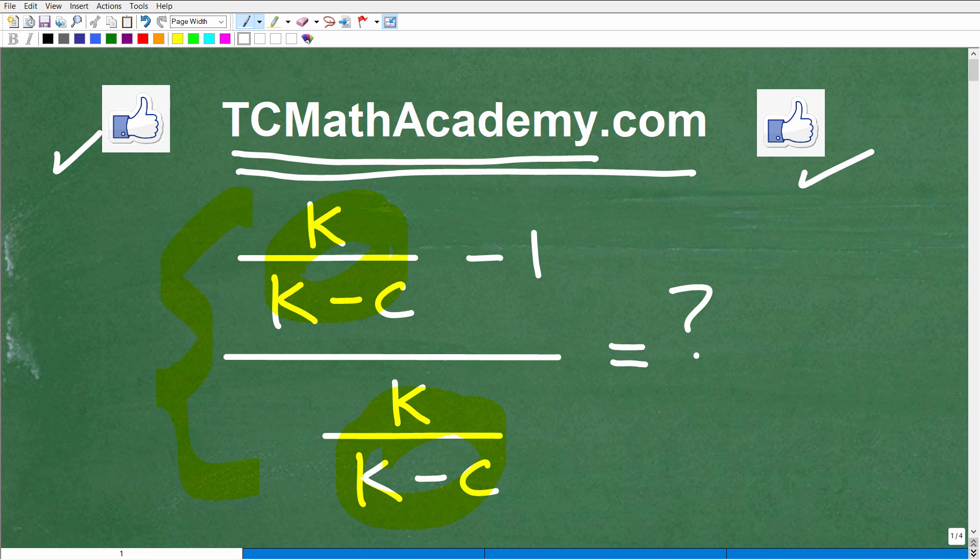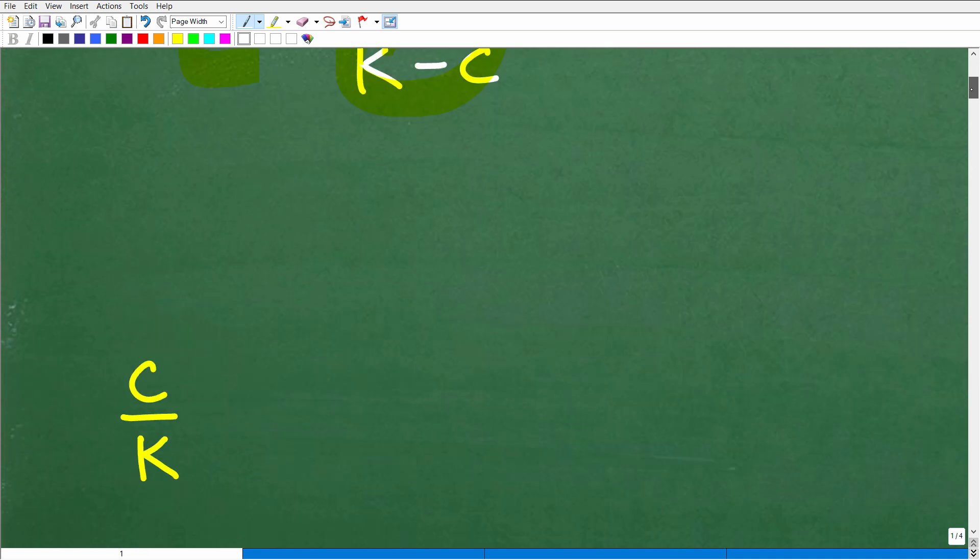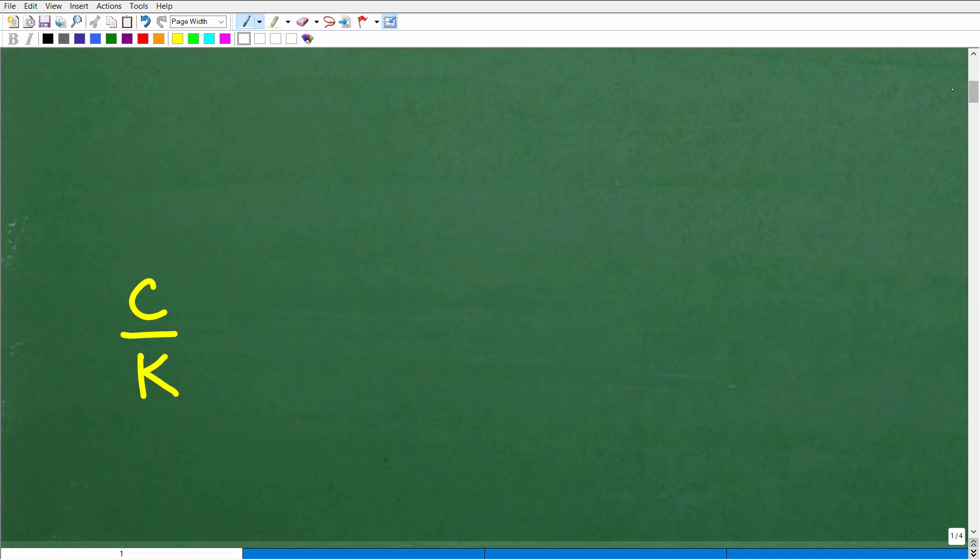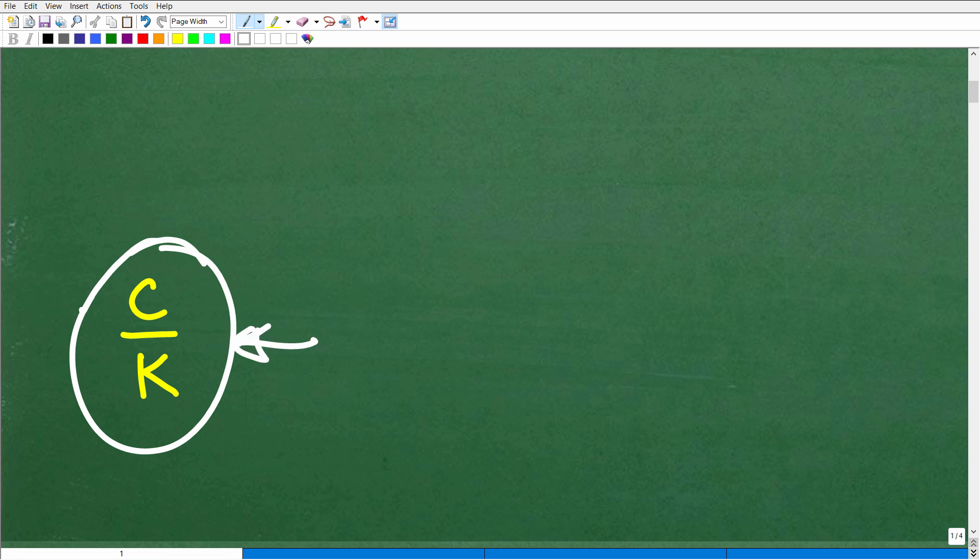Okay, so let's go and take a look at the answer here. You see the problem. What is the answer? Well, all of this, when it's said and done, is equal to c over k.